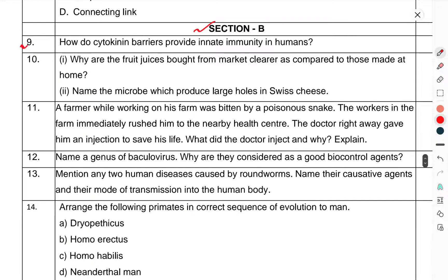Question 8: How do cytokinin barriers provide innate immunity in humans? Question 10: Why are fruit juices bought from the market clearer as compared to those made at home?